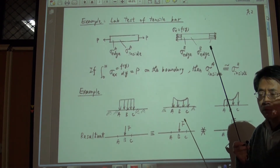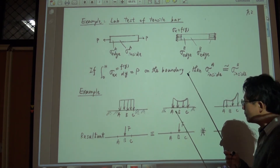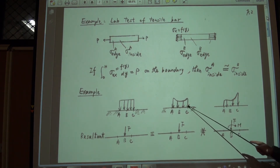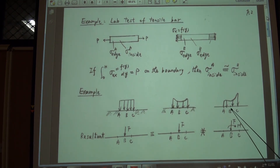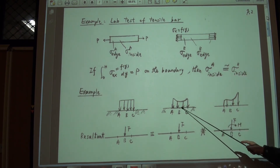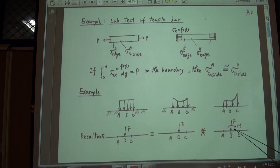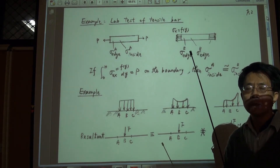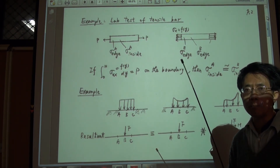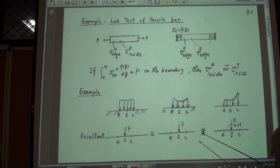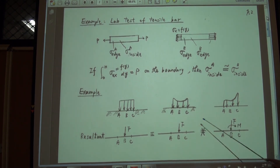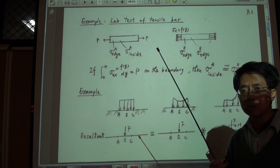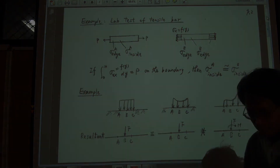Far away from the boundary, the stress and deformation will be the same. Another important point: if you have two sets of distributed loads and these two sets have different resultant forces, then the similar principle cannot be applied. The similar principle can only be applied when the resultant forces of the two systems are the same. If they are not the same, then no such conclusion can be drawn using the similar principle.